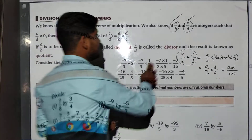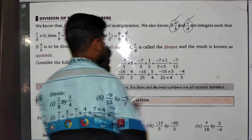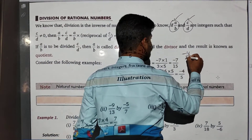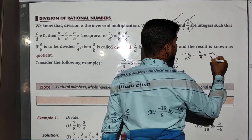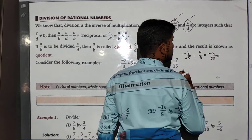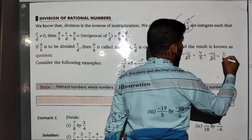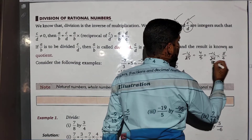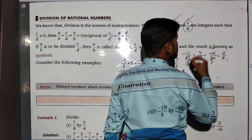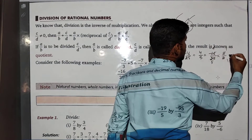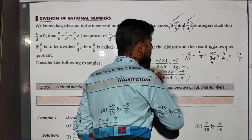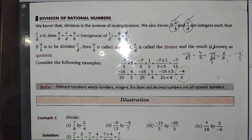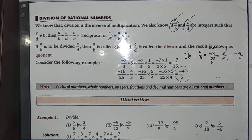Let's take an example. If we want to divide -16/25 by 4/5, the division sign changes to multiplication and the reciprocal of 4/5 is 5/4. Simplifying, -16 multiplied by 5 and 25 multiplied by 4 gives us -4/5. So the answer is -4/5.